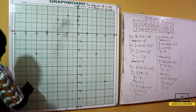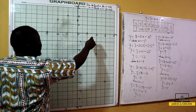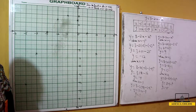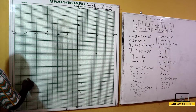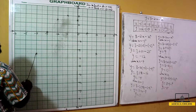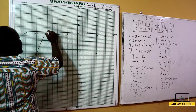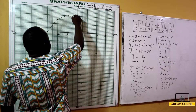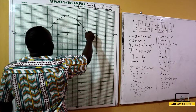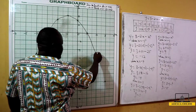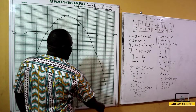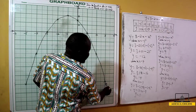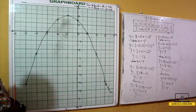Now pick up a pencil without a ruler and join all the points to form a smooth curve. This gives us our maximum curve — the curve for y equals 3 minus 2x minus x squared. Join from the first point through the maximum point, then back down to the last point, forming a smooth parabola.